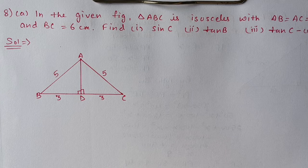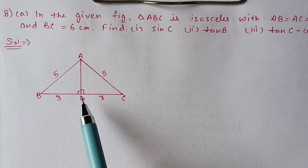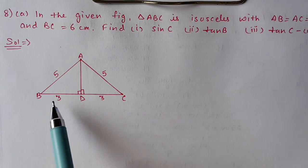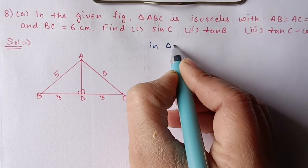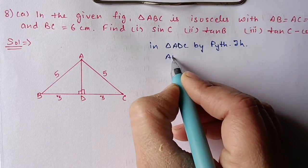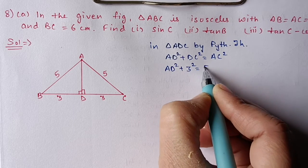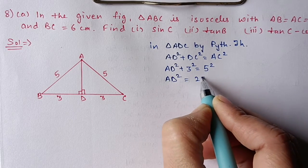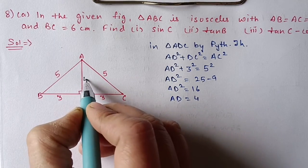Next, question 8 part A: In the given figure, triangle ABC is isosceles with AB equal to AC equal to 5 cm and BC is 6 cm. Find sin C, tan B, and tan C minus cot B. This is similar to the last question. We draw a perpendicular from A onto BC touching at midpoint D, dividing BC into 3 and 3. By Pythagoras theorem in triangle ADC: AD² plus 3² equals 5², so AD² plus 9 equals 25, giving AD² equals 16 and AD equals 4.